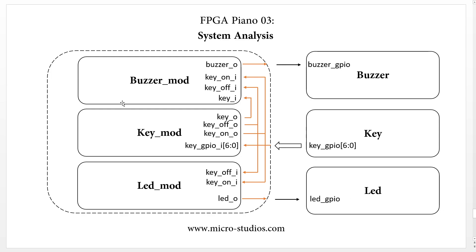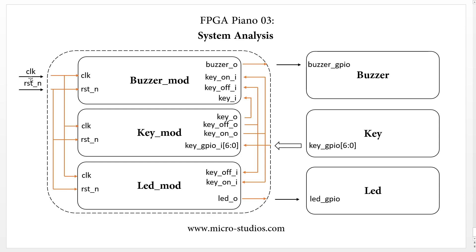For all three modules — buzzer module, key module, and LED module — they will all have the clock and reset signals. By default all of these are input signals. The clock and reset signals come from outside the FPGA: the clock comes from the crystal on the FPGA board, and the reset comes from the FPGA reset pin.